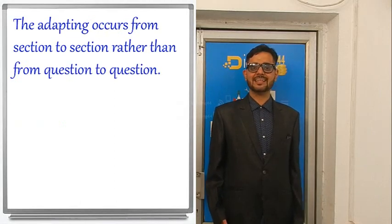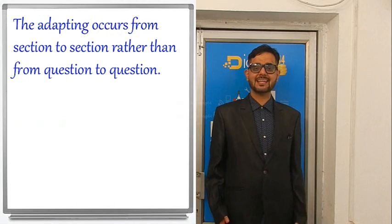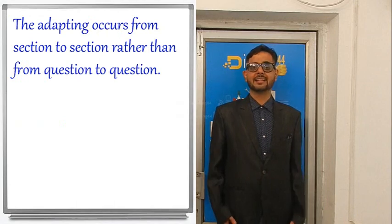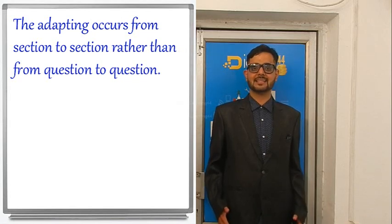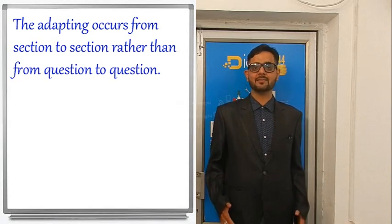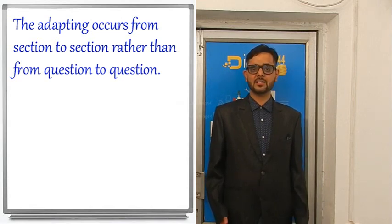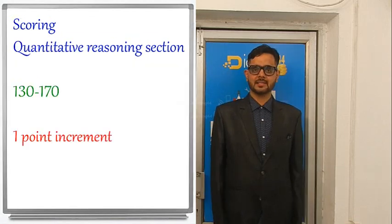Now, is GRE an adaptive test? GRE is a multi-stage adaptive test. Within each section, you can freely move back and forth among the questions, change answers, and flag questions to answer later. The adaptive test occurs from section to section rather than from question to question. If you do well on the first verbal reasoning section, you will get a hard second verbal reasoning section and be eligible for a higher score. If you do poorly, you will get an easy second verbal reasoning section but will not be eligible for a higher score.